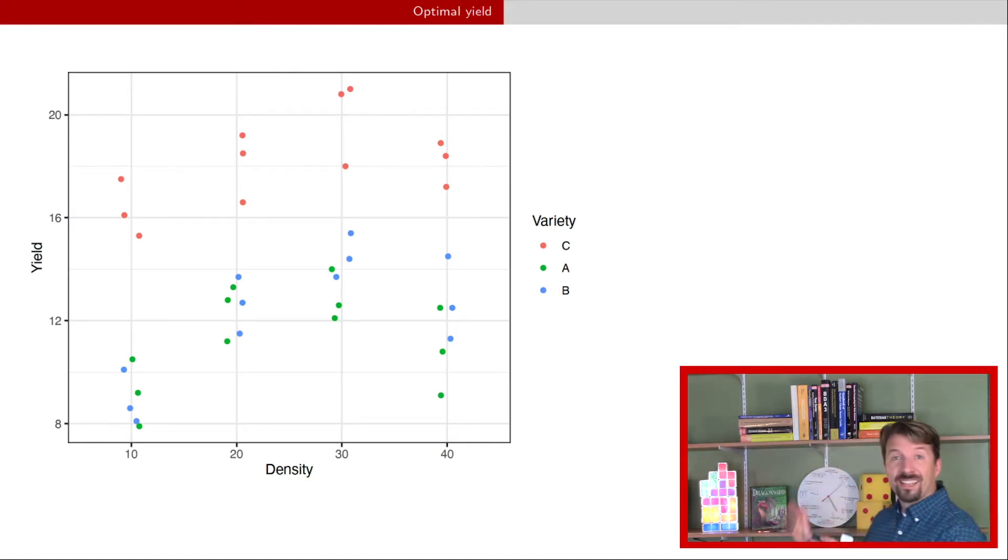Alright, so this is a look at that data that we've been talking about. It's balanced and complete so we don't have to worry about that nuance. And as before you can see here that you have some curvature with regard to density and you have variety C seemingly outperforming varieties A and B.